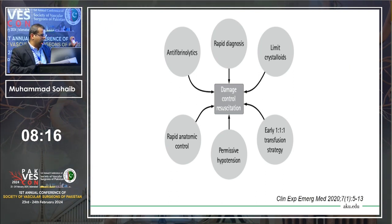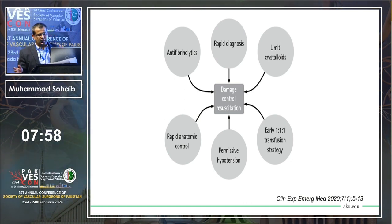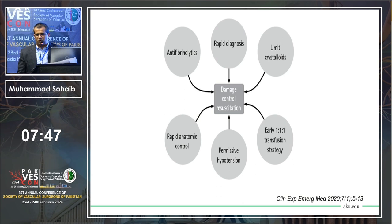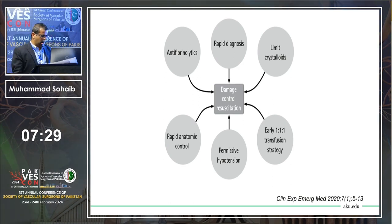The fundamental parts of damage control resuscitation: number one is rapid diagnosis — the surgeon must communicate to the anesthetist and all theater staff that there is uncontrolled bleeding, so the massive transfusion protocol is activated. Limit the crystalloid — do not give excessive fluids. If you give saline, its pH is around 5.5; Ringer's lactate is 6.5. Giving more crystalloid causes more acidosis and more dilution of coagulation factors, worsening consumptive coagulopathy.